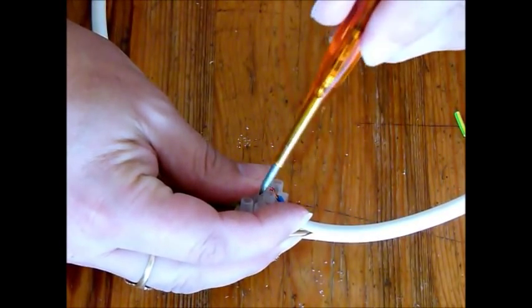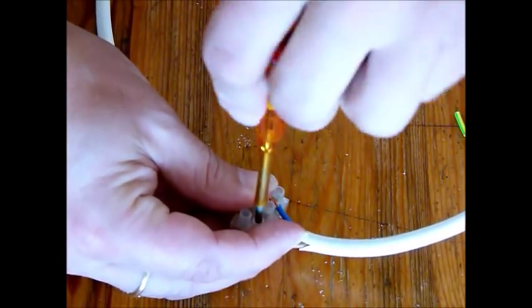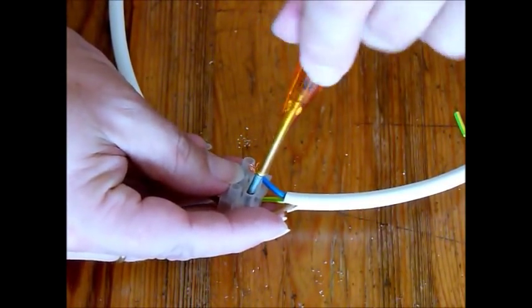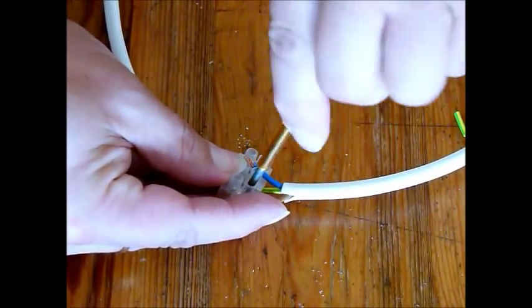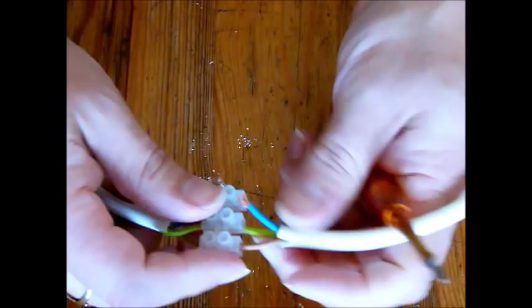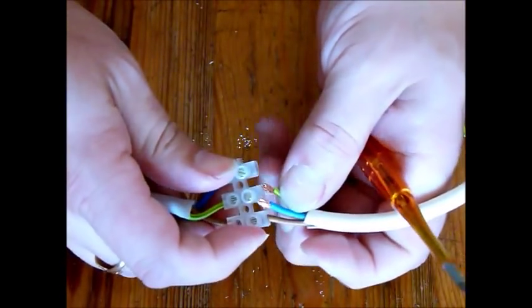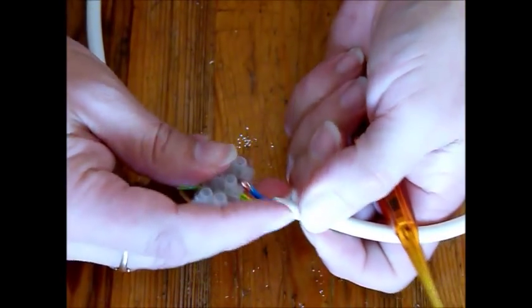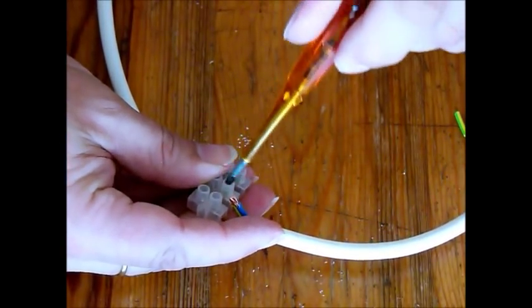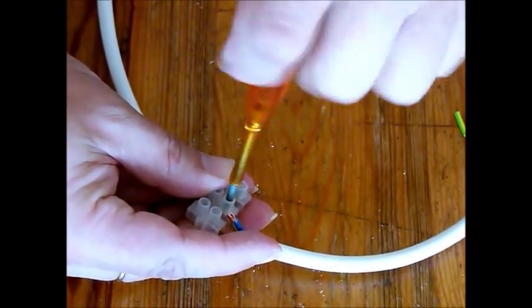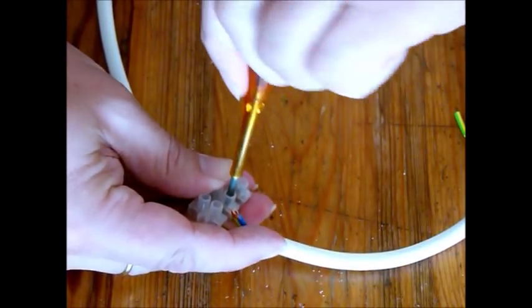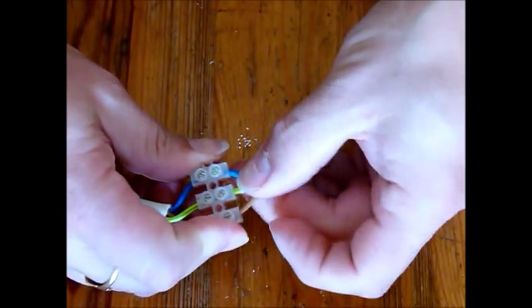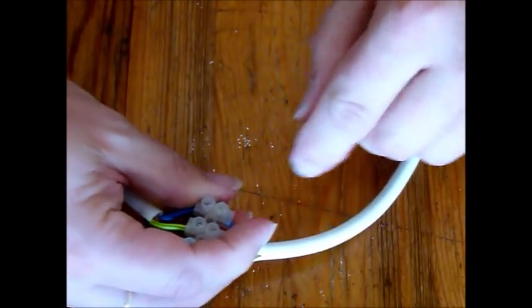Tighten it down as we did before. Tighten down the screw onto it. There we are. And then as we had the earth in the middle, we'll put the earth in the middle there. That can be a little fiddly. And there's the earth in place. Tighten that down tightly. And then finally, we put the neutral in the blue, corresponding to the blue on the other side.